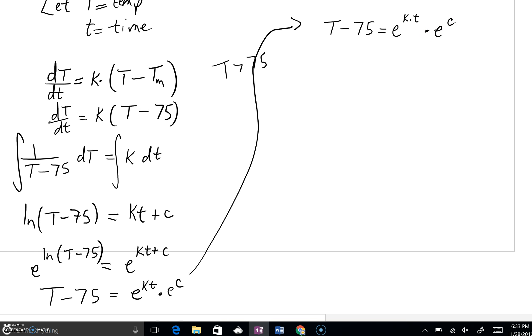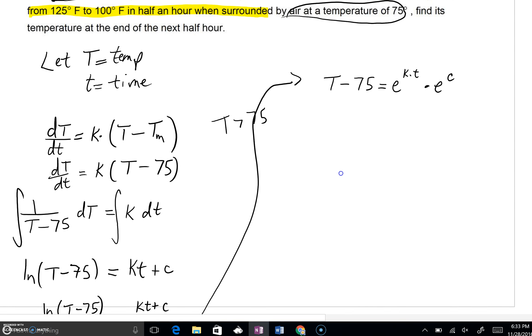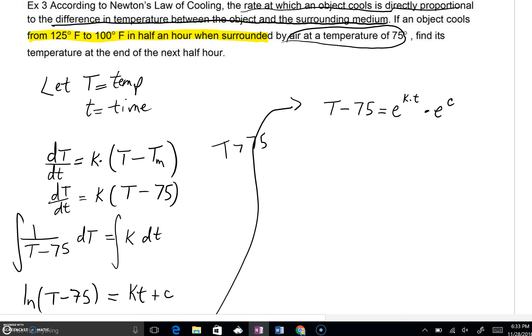But we're going to have to find some missing pieces. We're going to solve for E to the C and solve for E to the K. To do that, we need some help. If we look at what has been highlighted, it says that this object cools from 125 degrees Fahrenheit to 100 degrees Fahrenheit in half an hour. That has a wonderful implication. It's really saying that at time zero, the temperature is 125 degrees Fahrenheit. So that's our starting temperature. That's at time equals zero.